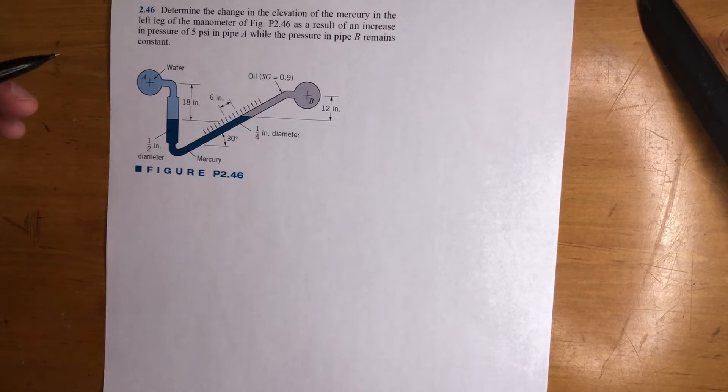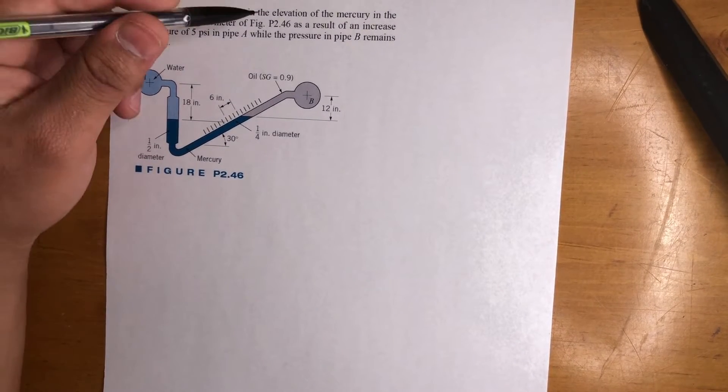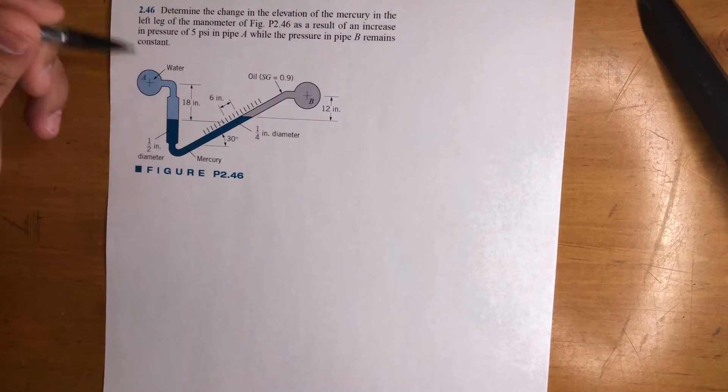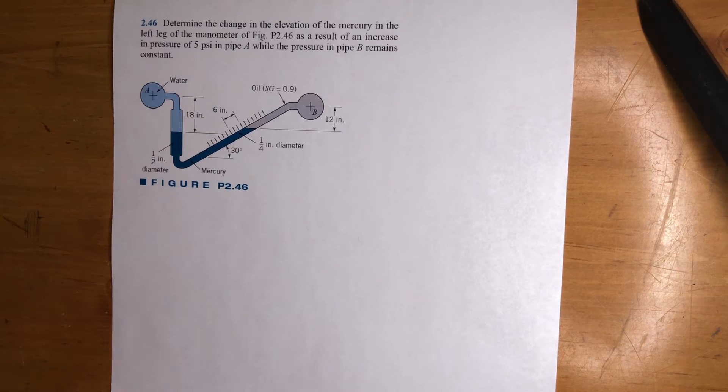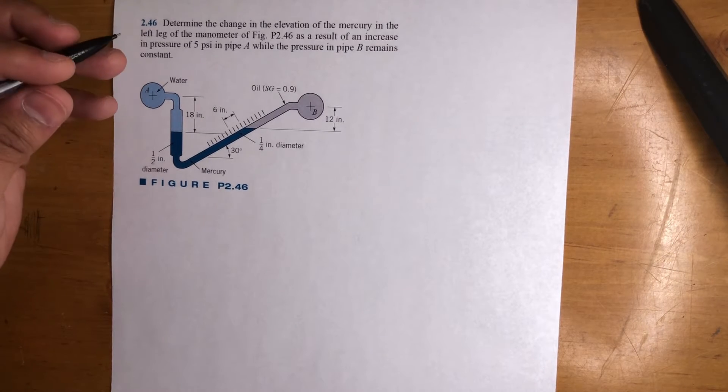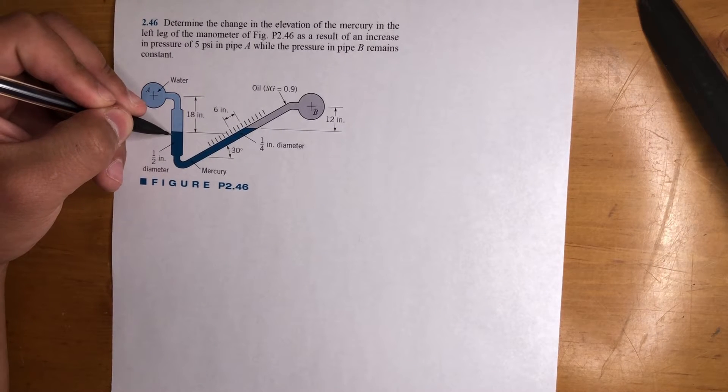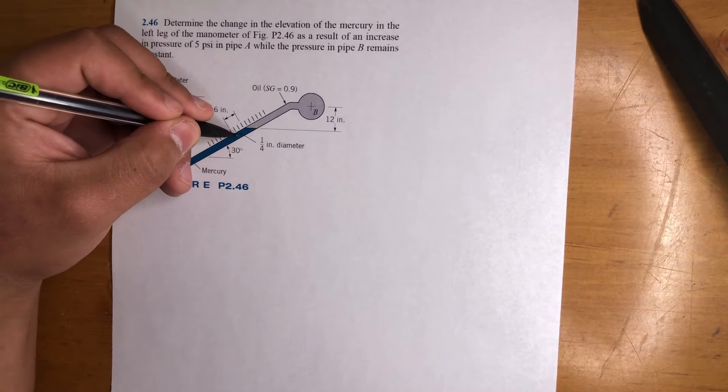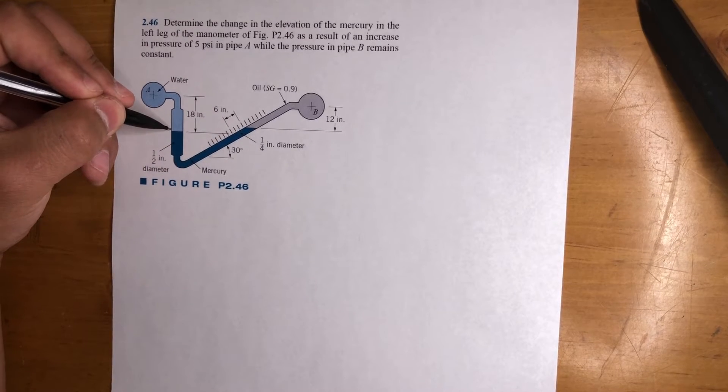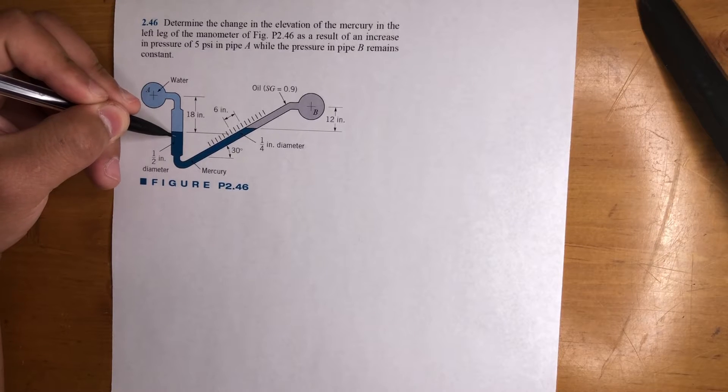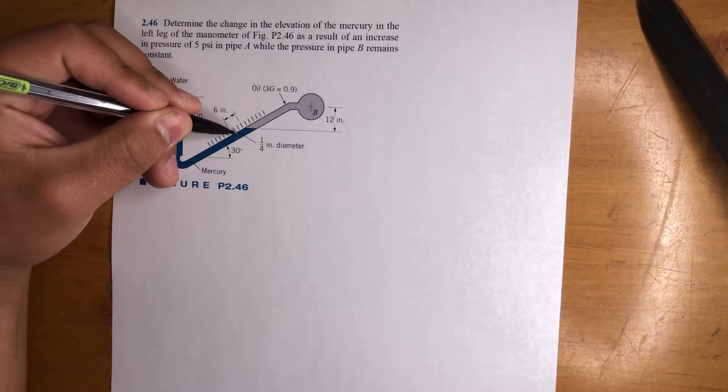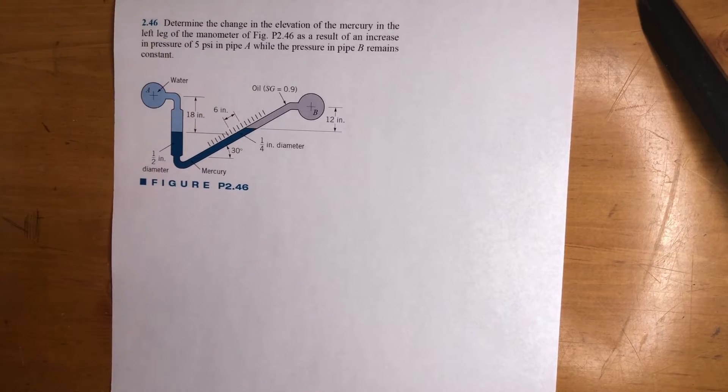This one's easier. It's asking for the elevation of the mercury in the left leg. Unlike 245, we're not going to have to change our axis. This one's a little bit easier in that sense, but there is a catch. There's a difference in diameter here and here.